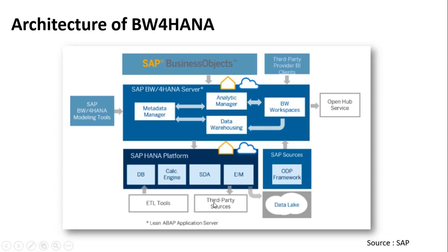In BW for HANA, you can get data from third-party sources or ETL tools and dump it into the SAP HANA database, where the calculation engine processes the data. We also have the option of SDA and EIM, which are brokers in the system that help you bring in data from various sources, including data lakes. For SAP systems, we have the ODP framework available.